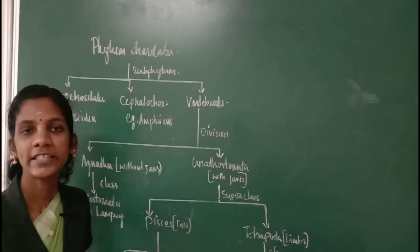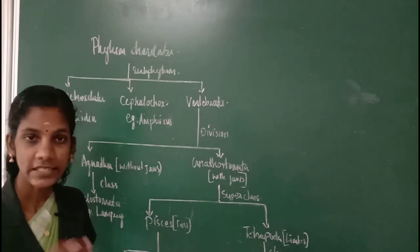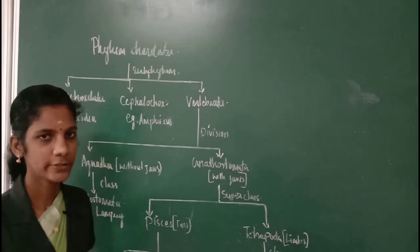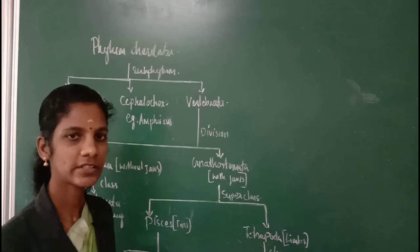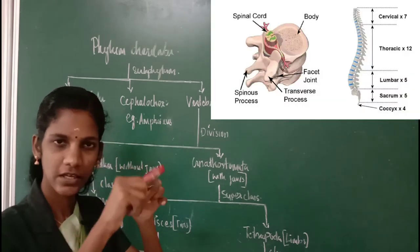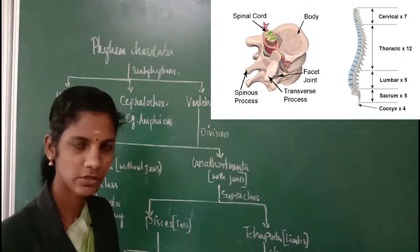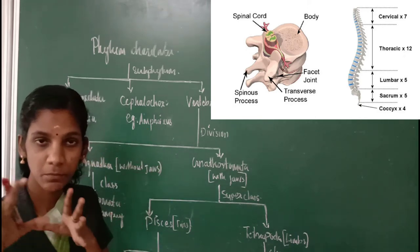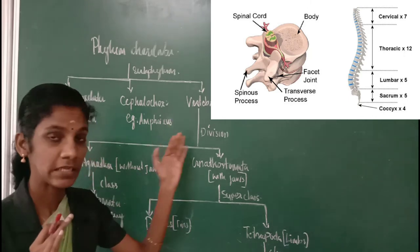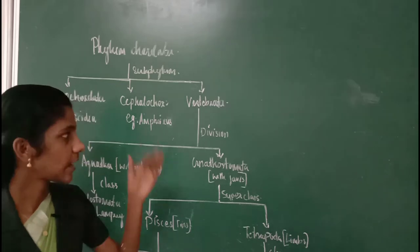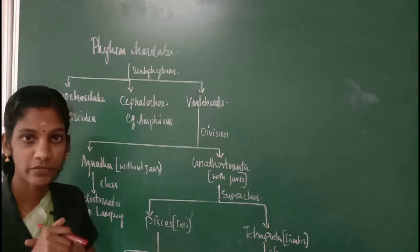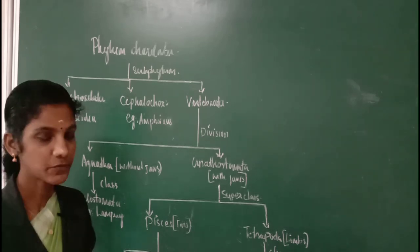The vertebral column consists of serially arranged circular rings called vertebrae. Another important identifying feature of the subphylum Vertebrata is the presence of a vertebral column. Animals which belong to phylum Vertebrata will always have a dorsal hollow nervous system.